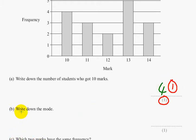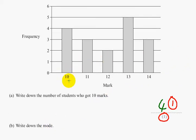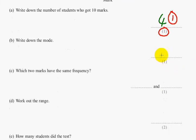Part B. Write down the mode. So the mode is the most common mark. So 4 people got 10, 3 people got 11, 2 people got 12, 5 people got 13, and only 3 people got 14. So the most common mark was 13, not 5. So the mode mark was 13, and that's also worth 1 mark.